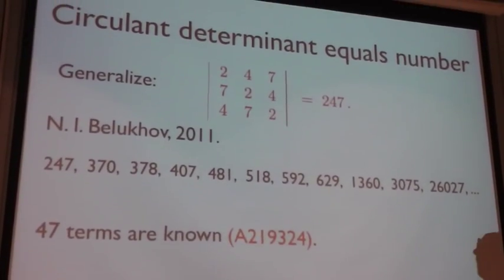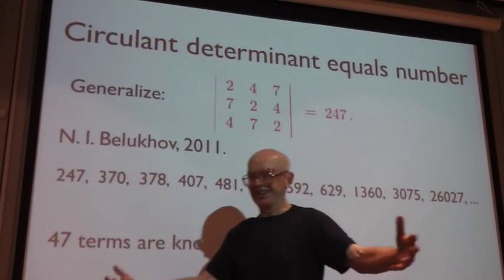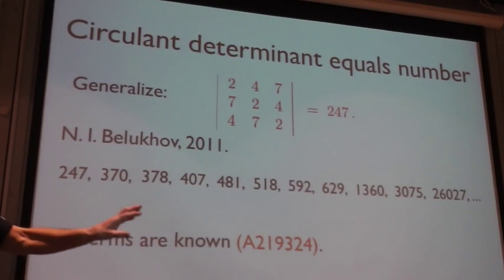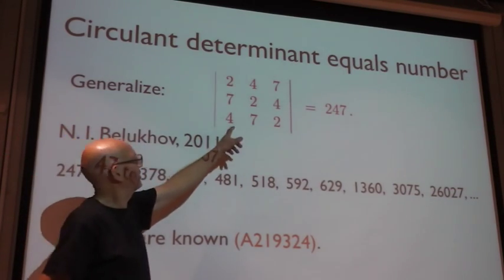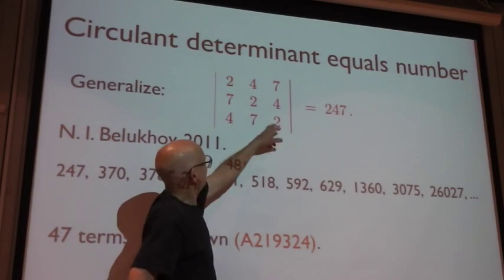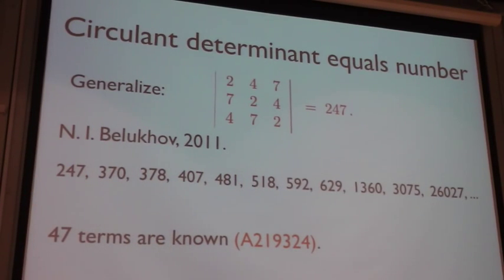The number 247, you may think this is a silly sequence but I actually am a little bit fond of it. What's the special property of 247? Well, if you write down the determinant of 247, 247, 247, and work it out, you get 247. And it's the smallest non-trivial number with that property. Generalize.